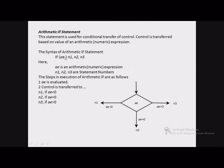AE is an arithmetic expression and these are statement numbers. If value of AE is less than 0, control will be transferred to the statement with statement number N1. If AE is equal to 0, control will be transferred to N2. And if AE is greater than 0, control will be transferred to N3. This is the diagrammatic representation of arithmetic if and this is the syntax.